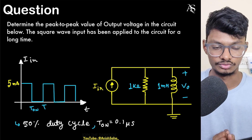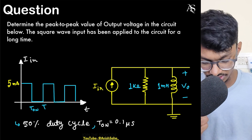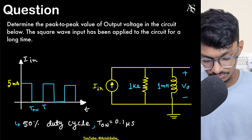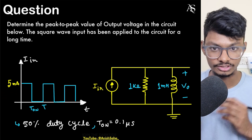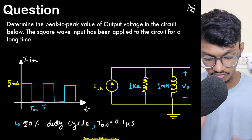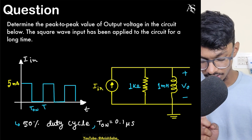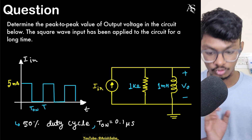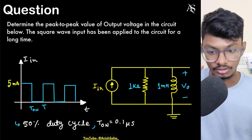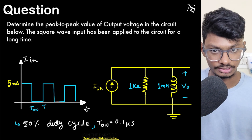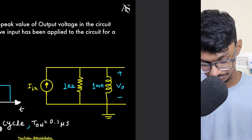Whenever a pulse-type or square waveform is given, you have to compare the time constant tau of the circuit with the time period of the input, or T_on — the duration for which the waveform is giving a signal. So how do we compute that?